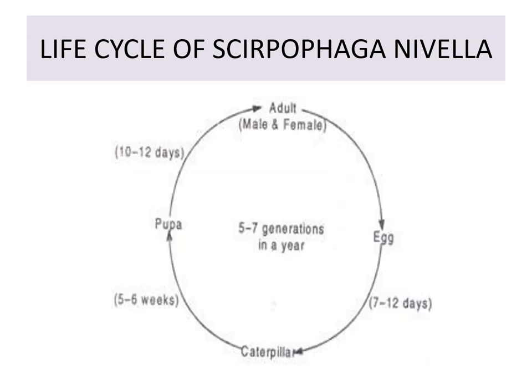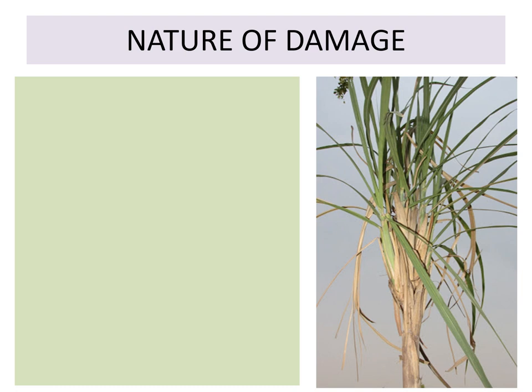In the life cycle of Scirpophaga Nivella, male and female adults lay eggs. Eggs hatch into caterpillars, which form pupae, and then the next generation of adults is formed. There are 5 to 7 generations in one year.